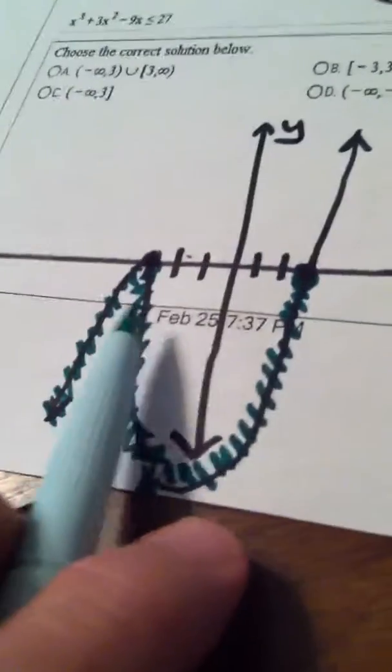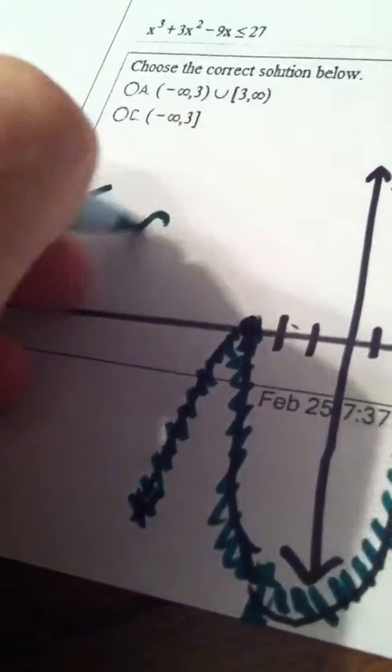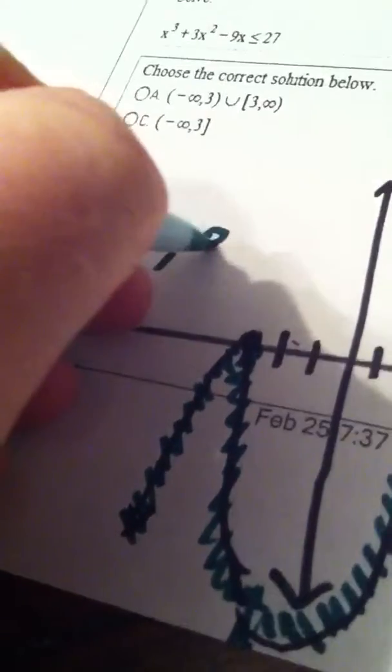I scan everything all the way until 3. From negative infinity to 3. Bingo!